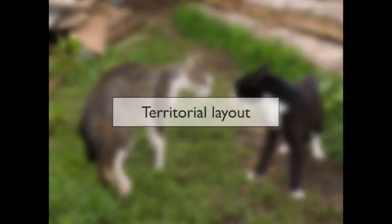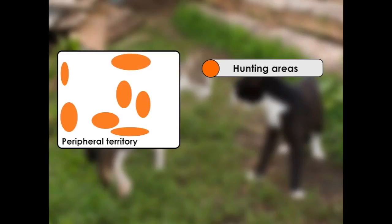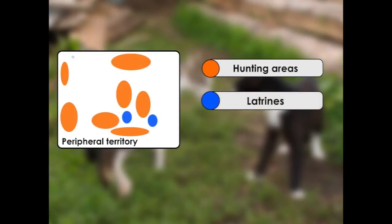The first thing to consider is the territorial layout that cats use. There are two main areas of the territory. The first is the peripheral territory, which is the boundary that contains all of the major resources that the cat uses. That includes a large number of hunting areas and a large number of latrine sites that the cat will use as well.